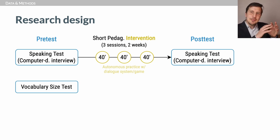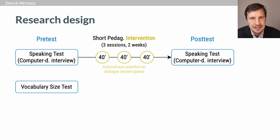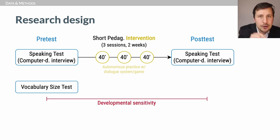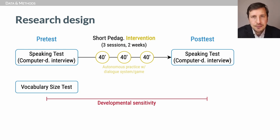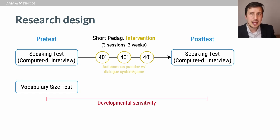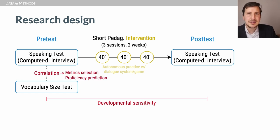In the pre-test and post-test, participants took an autonomous speaking test — a computer-delivered interview. This pre-test, post-test difference gives us the developmental sensitivity of metrics — it lets us know if some metrics can detect changes from such a short intervention. For validation, we used a vocabulary size test as a proxy of proficiency, and computed correlations against it to compare the predictive power of our fluency metrics.